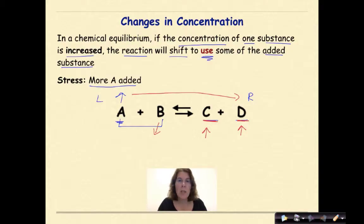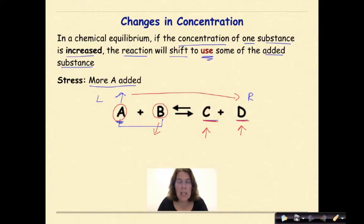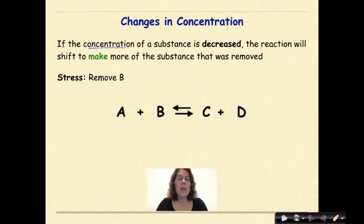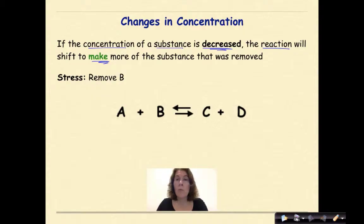Why is B decreasing? Because in order to make more of C and D, I have to combine A and B together. So in this situation, with the stress of adding more A, our equilibrium is going to shift to the right and it's going to favor the formation of more products until a new equilibrium point is reached. If the concentration of a substance is decreased — we remove it from the system — the reaction will shift to make more of the substance that was removed.